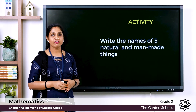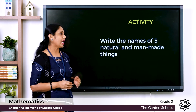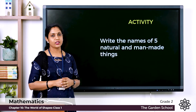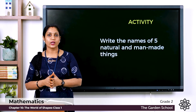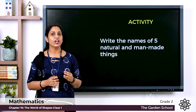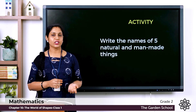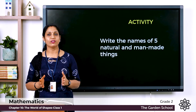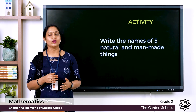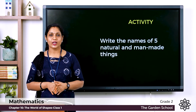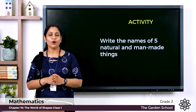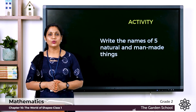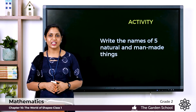Finally, there is an activity: write the names of five natural things and five man-made things that you find around you. With this we finish our chapter on Natural and Man-made Things. Hope it's clear. We'll meet in the next class — thank you.